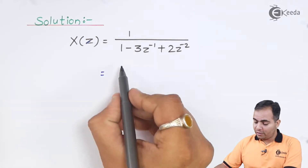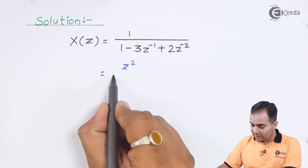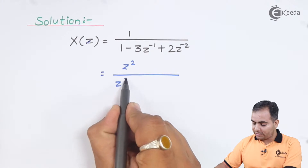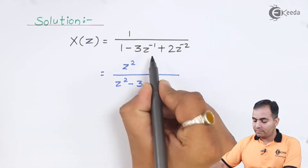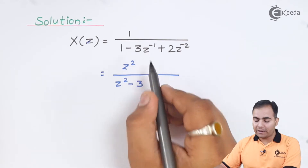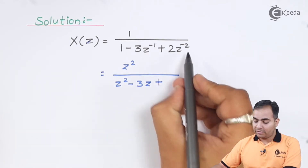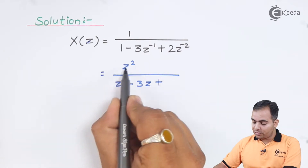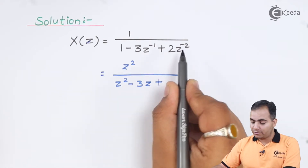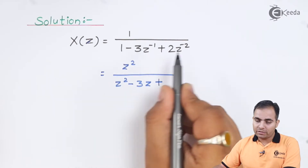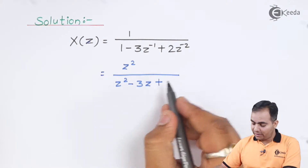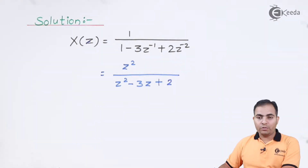We multiply numerator and denominator by z². So z² times 1 gives z² in the numerator. In the denominator: 1 is replaced by z²; z² times z⁻¹ gives z¹, so we write 3z; and z² times z⁻² gives z⁰ = 1, so we write just 2. The denominator becomes z² - 3z + 2.